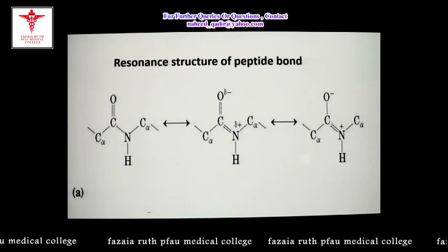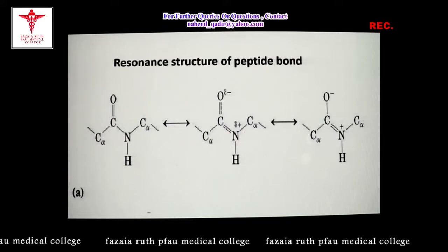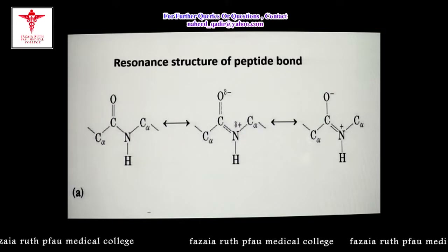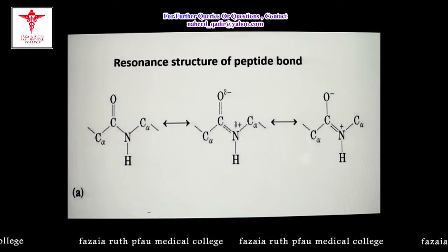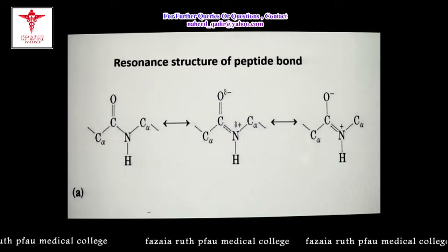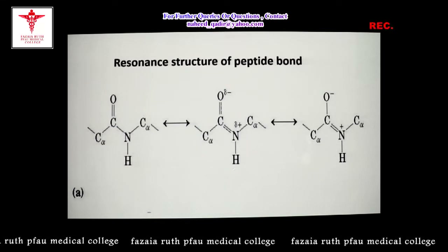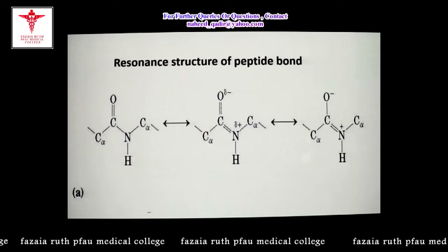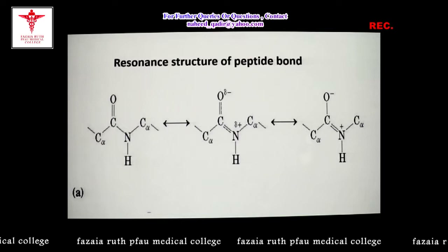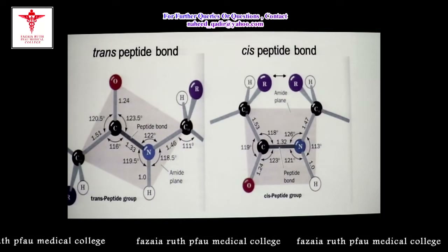Because the oxygen of the carbonyl carbon has a partial negative charge, it acts as an acceptor of electrons. The nitrogen of the amide group has a positive charge, so it is a donor of the hydrogen atom. This oxygen as acceptor and nitrogen as donor participate in the hydrogen bonding seen in the secondary structure of protein.